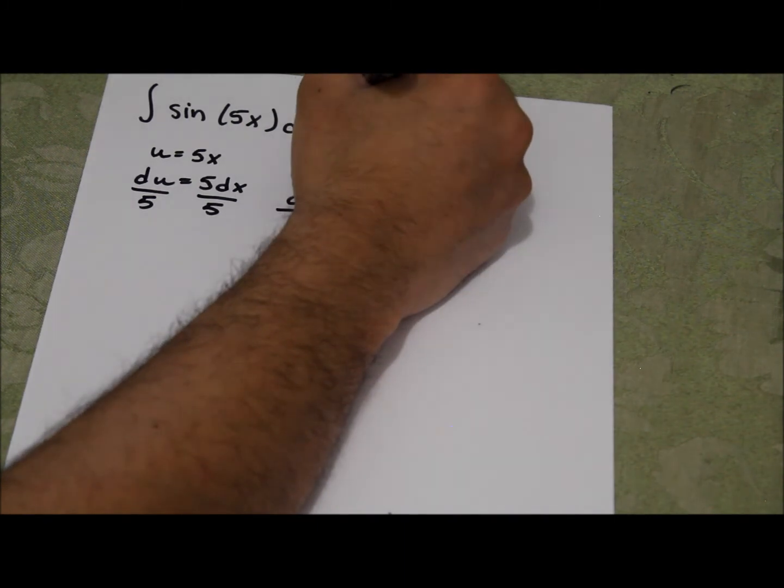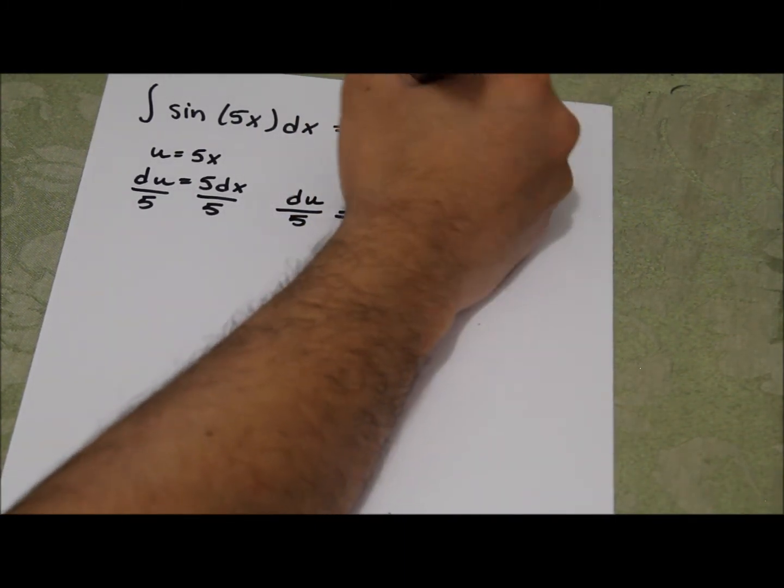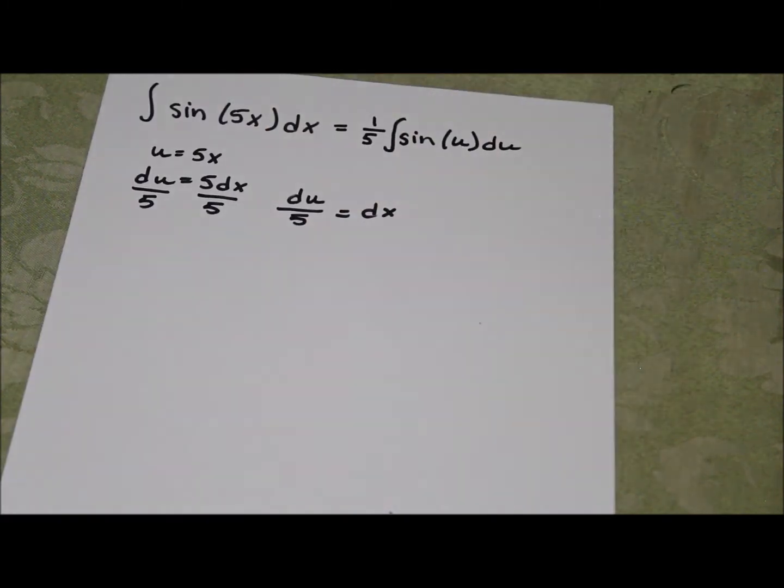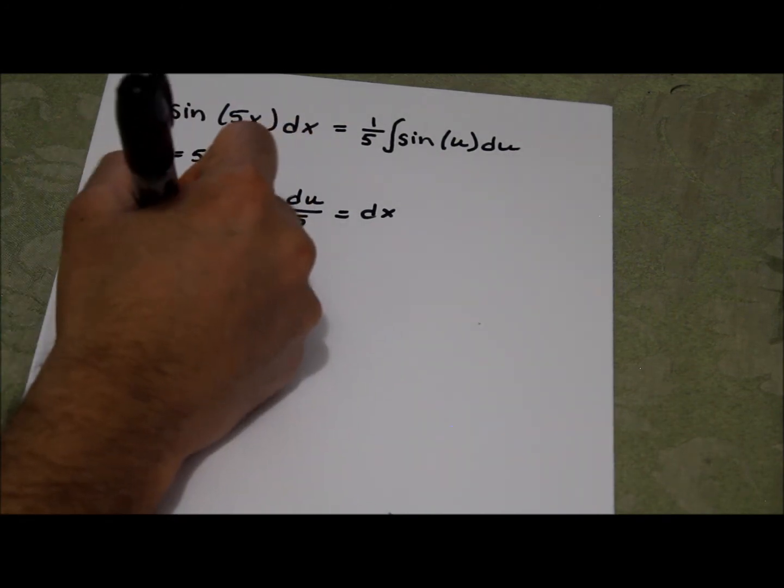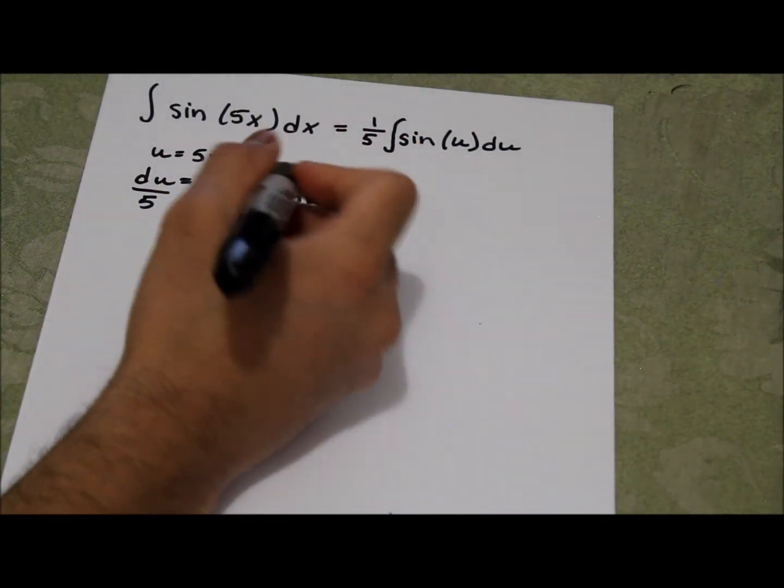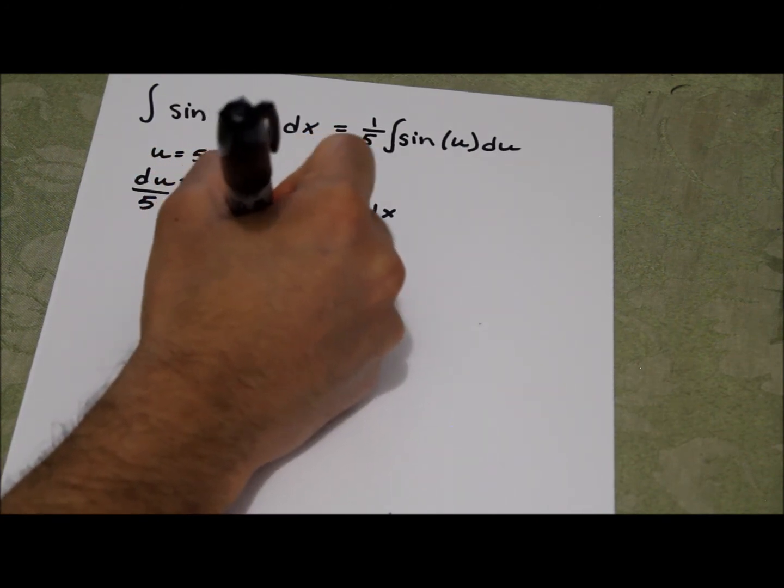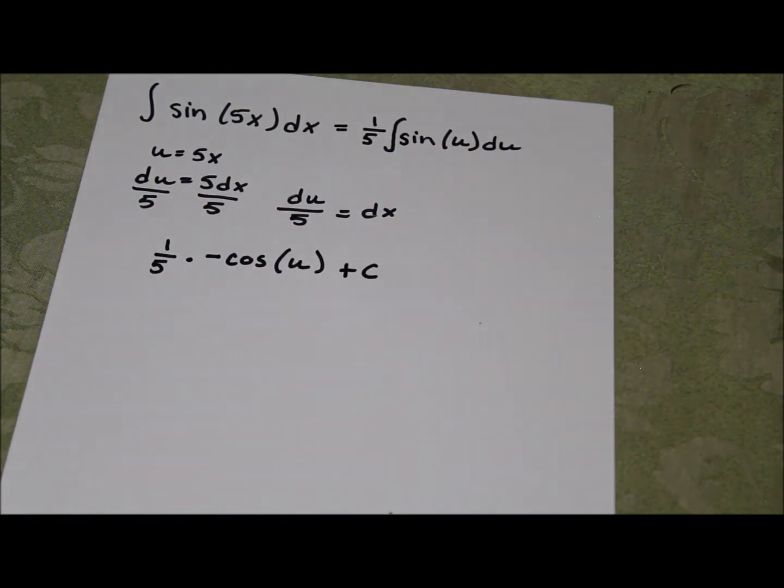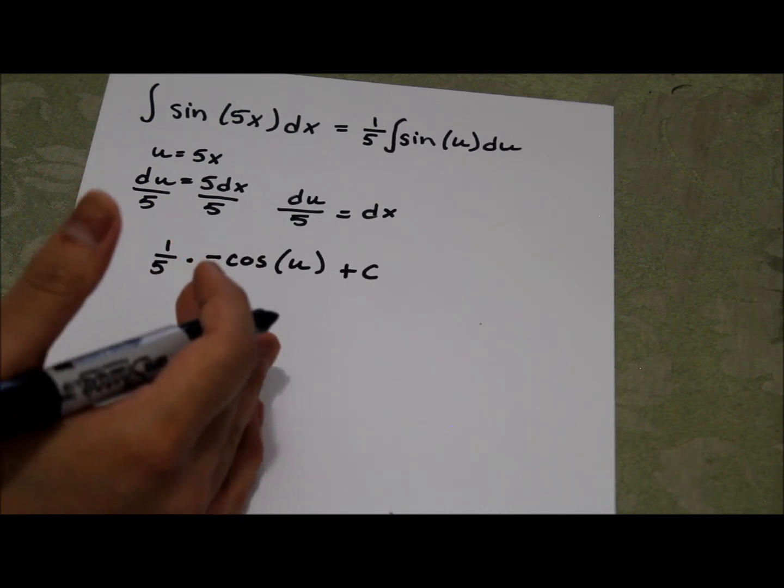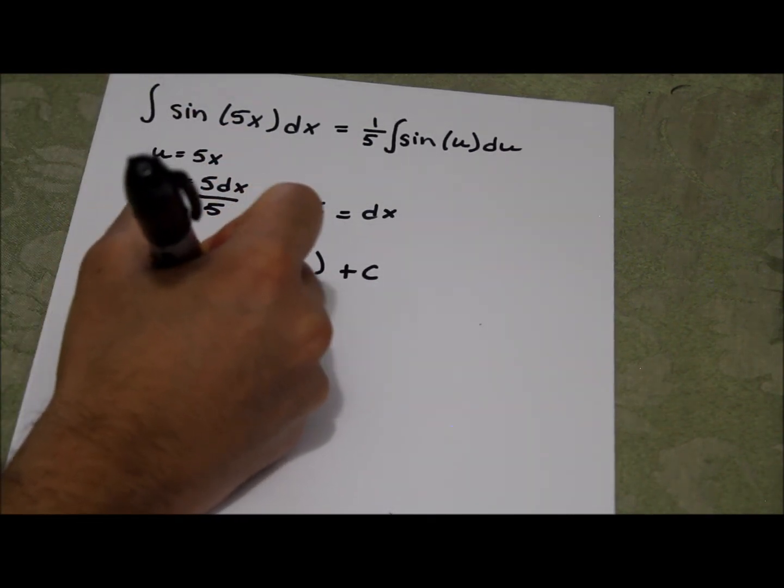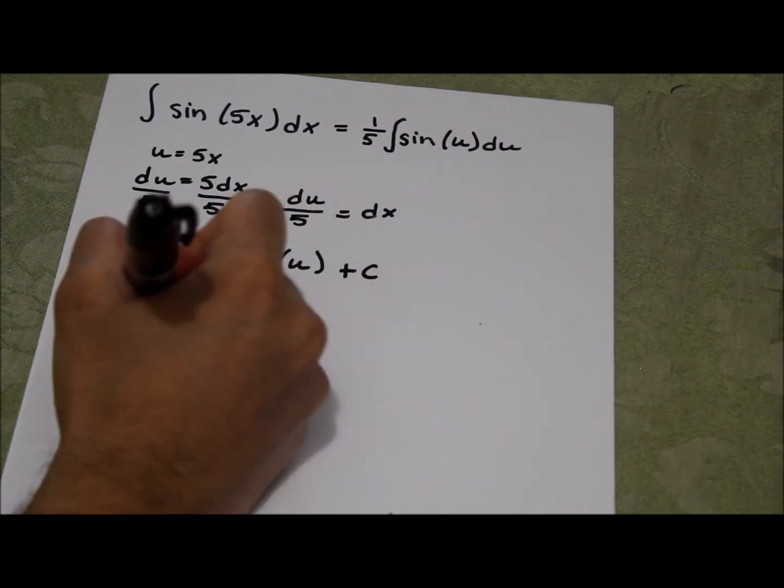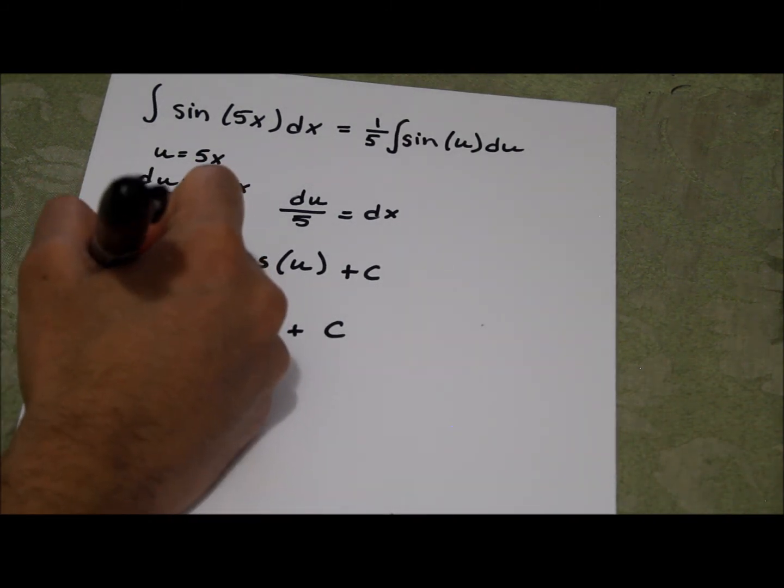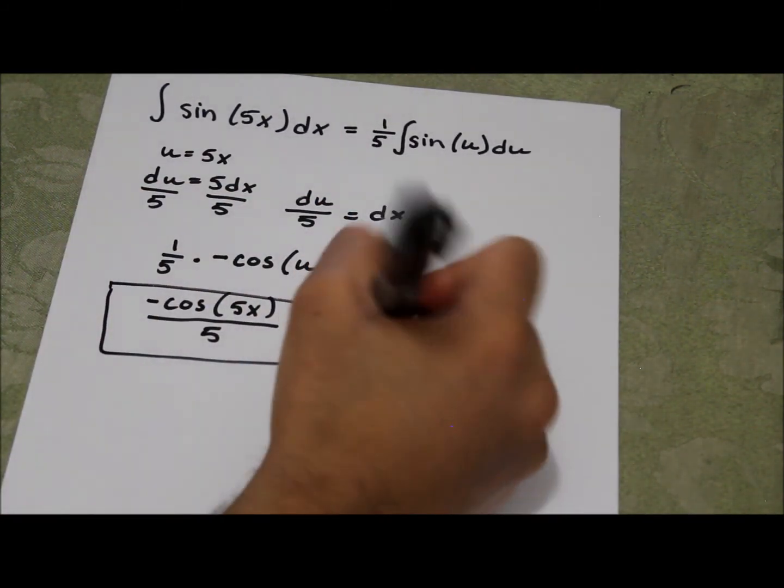Now I can just rewrite the problem: 1 fifth times integral of sine of u du. And now I can just integrate. 1 fifth times integral of sine u is negative cosine u plus c. And now I'm not done again. I have to replace the u with 5x. So I get negative cosine of 5x over 5 plus c. And that is the final answer for that problem.